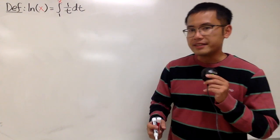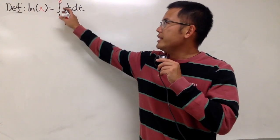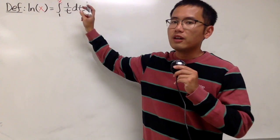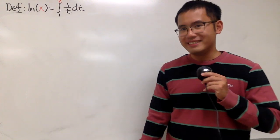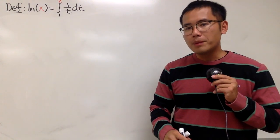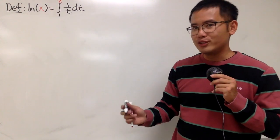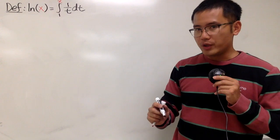In this video, we are going to take the definition that ln(x) is equal to the integral from 1 to x of 1 over t, dt, and we'll prove some log properties based on this definition. So here we go.